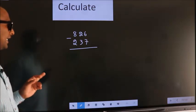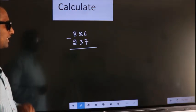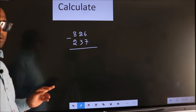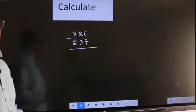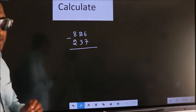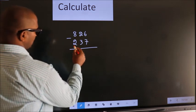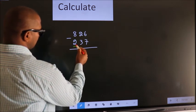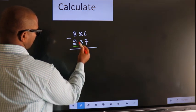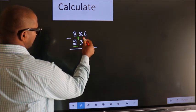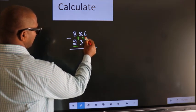Calculate 826 minus 237. How do we calculate this faster? See, you leave the faster digit. Here you write 9, here you write 10.